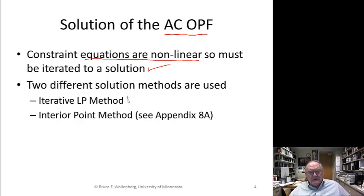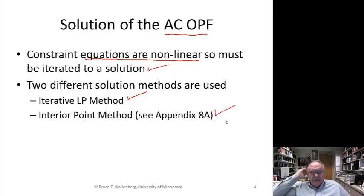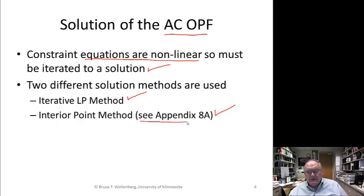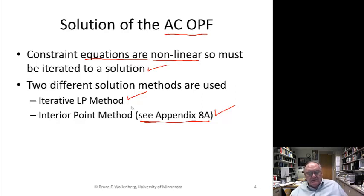The first is called the iterative LP method, which we'll explain in some detail. The other is called the interior point method. Both are used actively by the power industry — by the computer systems that operate the markets. They will get to the same solution. The interior point method really will take another whole lecture and is covered in the appendix.